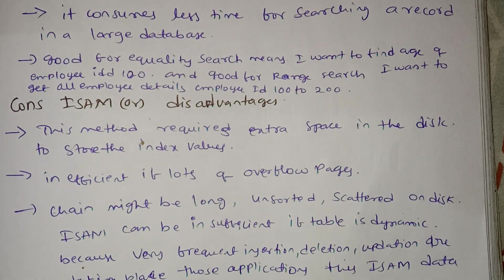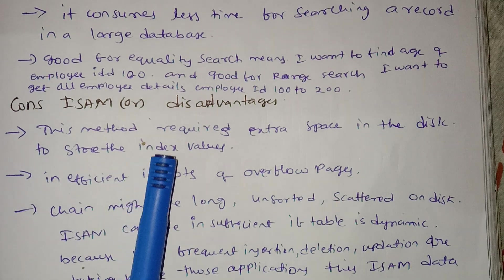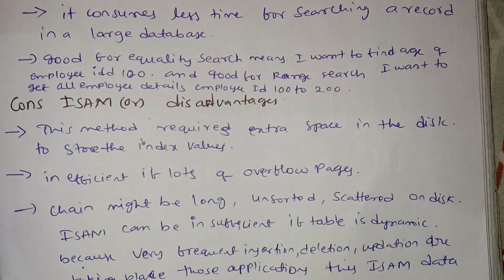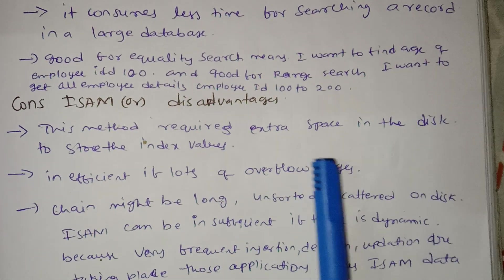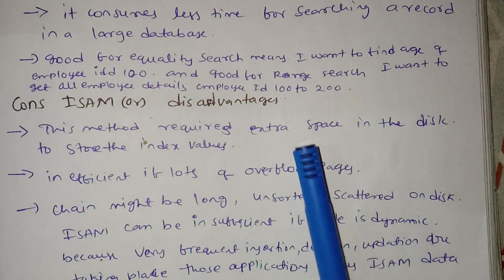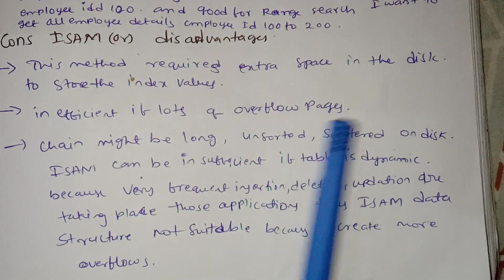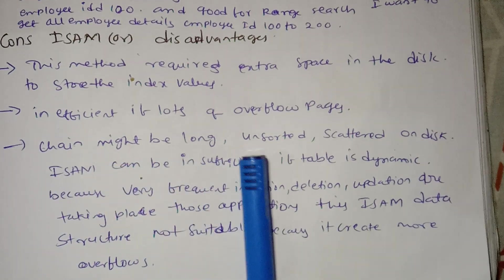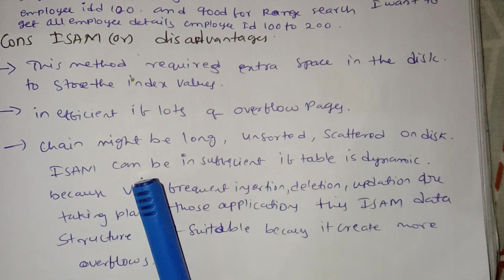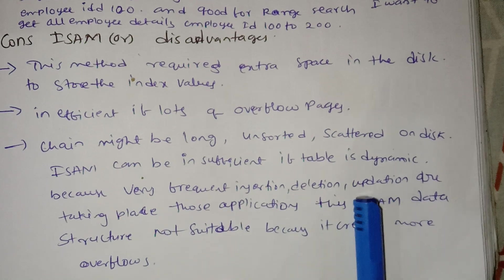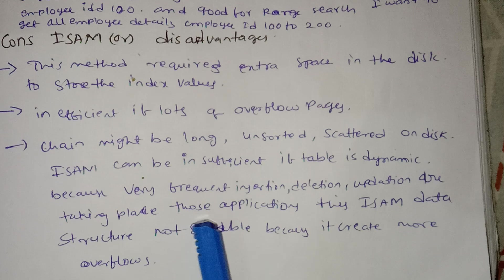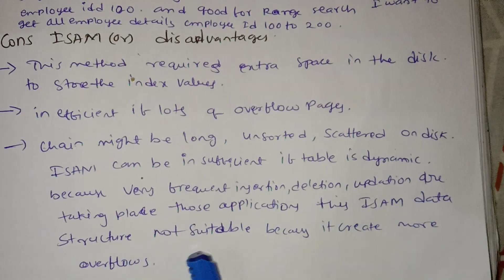A disadvantage is that this method requires extra space on disk to store the index values, using extra secondary memory. It is also inefficient if there are lots of overflow pages, as the overflow chain might become long, with unsorted records scattered on disk.